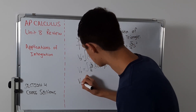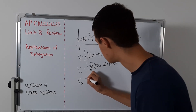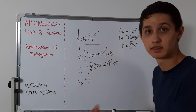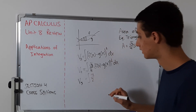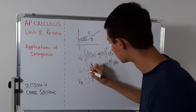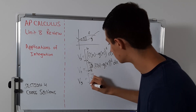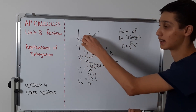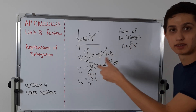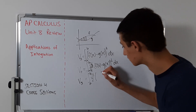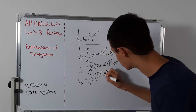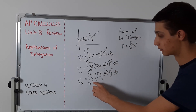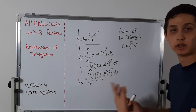You can also find volume with respect to a semicircle. The area of a circle is pi r squared, but the area of a semicircle is pi over 2 times r squared. The integral from a to b of pi over 2 times (F(x) minus G(x)) over 2, all squared, dx. Note that F(x) minus G(x) is the diameter, so we divide by 2 to get the radius. You could simplify this to pi over 8 times (F(x) minus G(x)) squared.